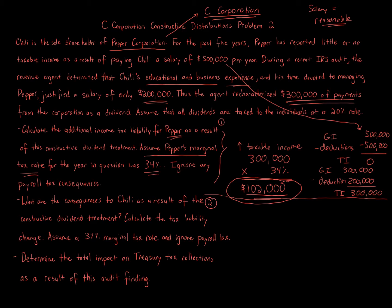The second question says, what are the tax consequences to Chile as a result of constructive dividend treatment, calculate the tax liability change, assume a 37% marginal tax rate, and ignore payroll tax? So now here's another issue. When Chile receives this $500,000 salary, and we're ignoring payroll tax, basically Chile is paying 37% taxes.